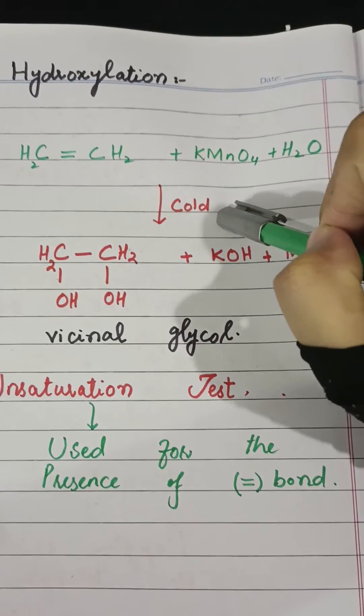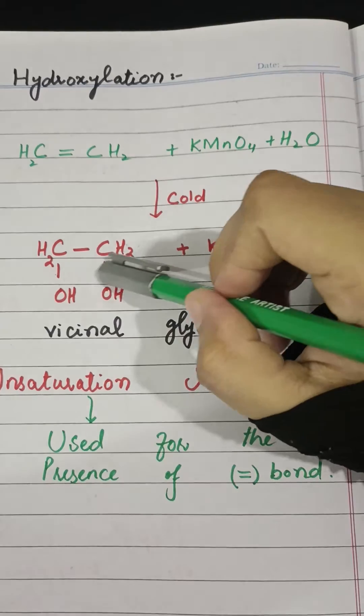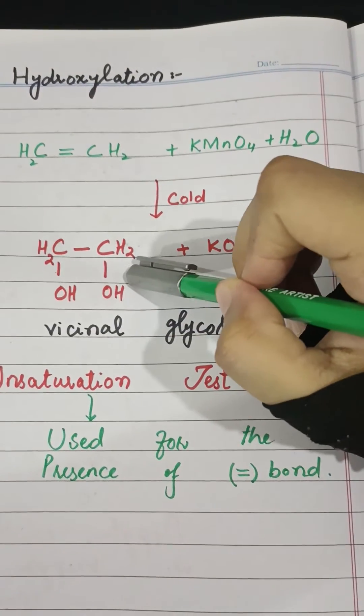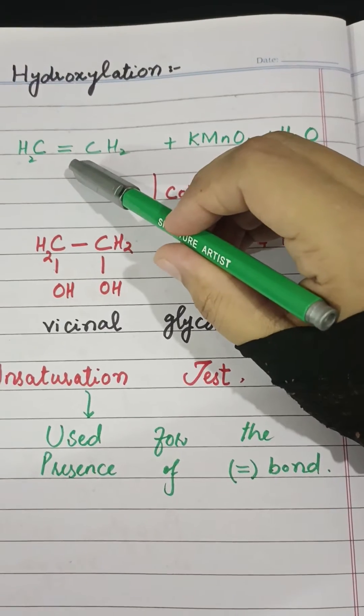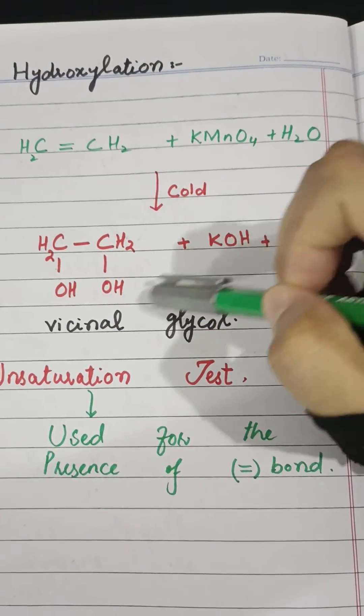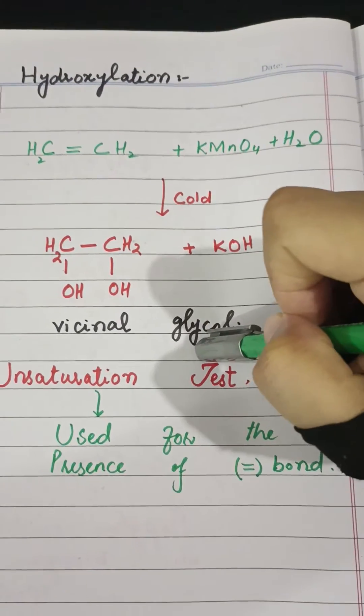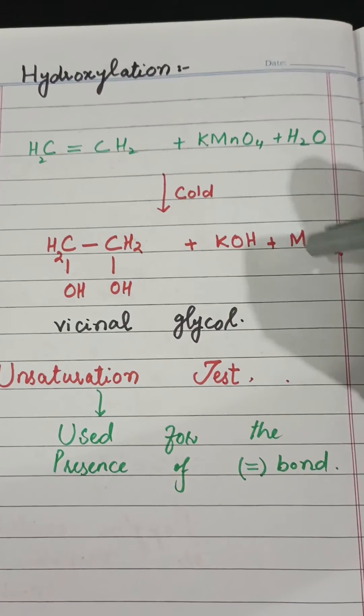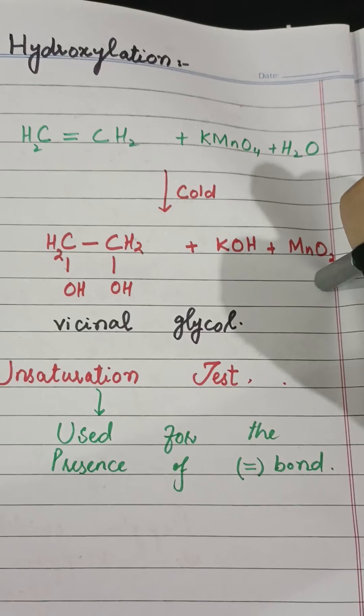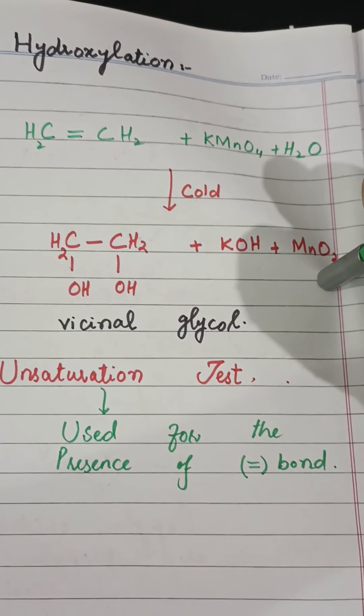Here the hydroxyl groups will be introduced on both sides of the double bond, and it will give us vicinal glycol, potassium hydroxide, water, and manganese oxide as our byproduct.